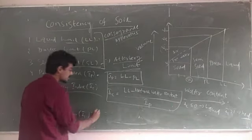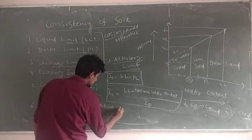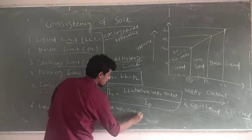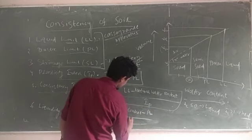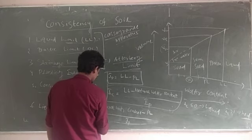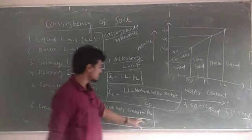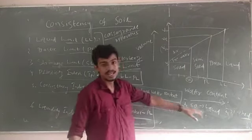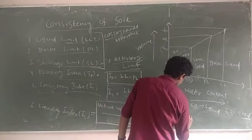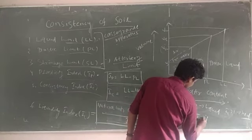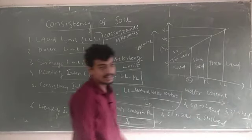The last term is liquidity index (IL). The formula is: IL = (Natural Water Content minus Plastic Limit) divided by IP. It is just the opposite of consistency index. If IL is less than 0, the soil is in solid state. If IL is greater than 1, the soil is in liquid state — just opposite of consistency index.